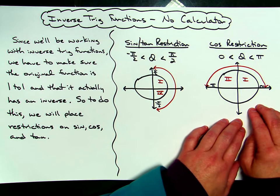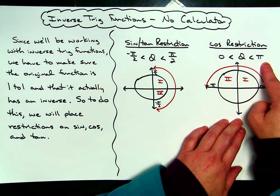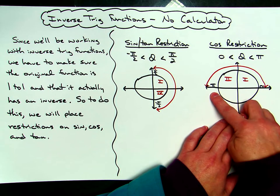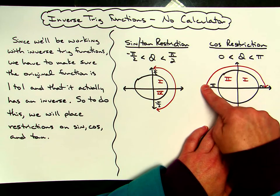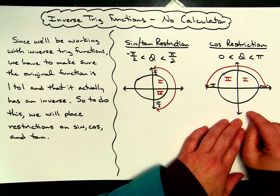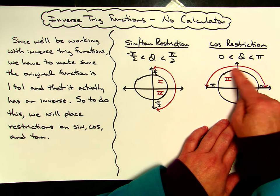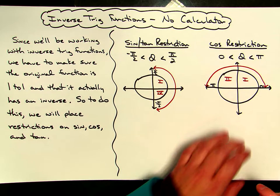For the cosine restriction, theta is going to have to be between 0 and pi. On the unit circle, anything in between there will put us in quadrants 1 and 2. So when doing inverse cosine functions, we're going to look on the unit circle in quadrants 1 and 2 for those answers.